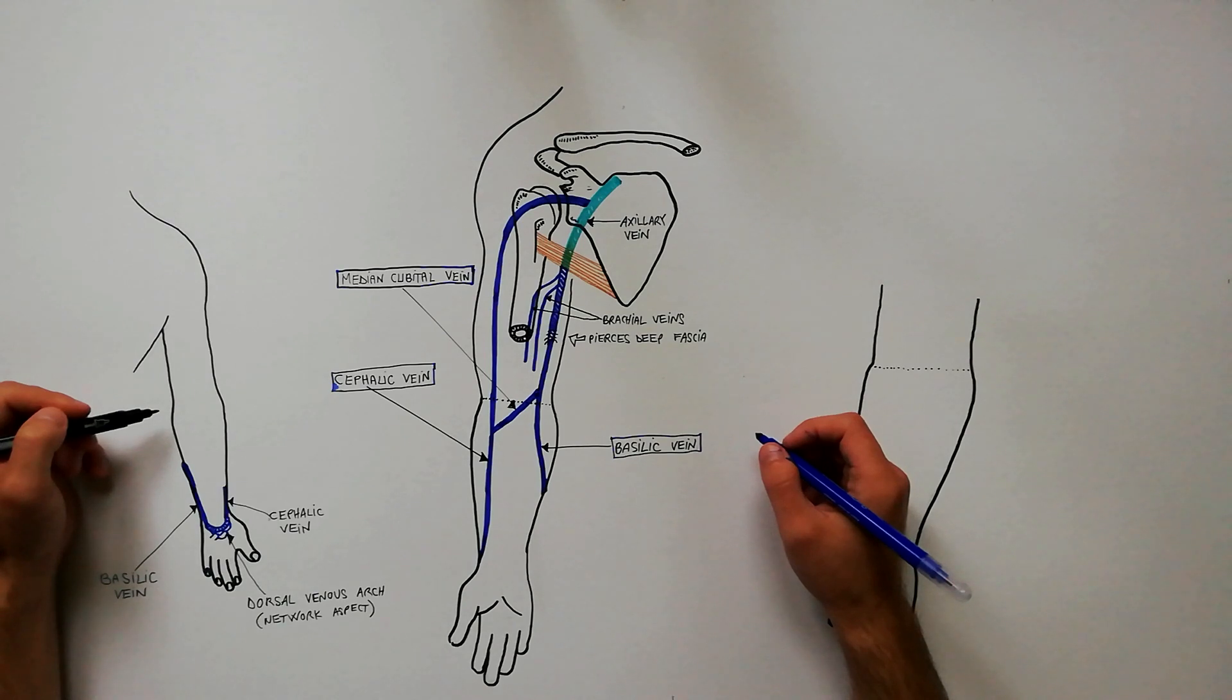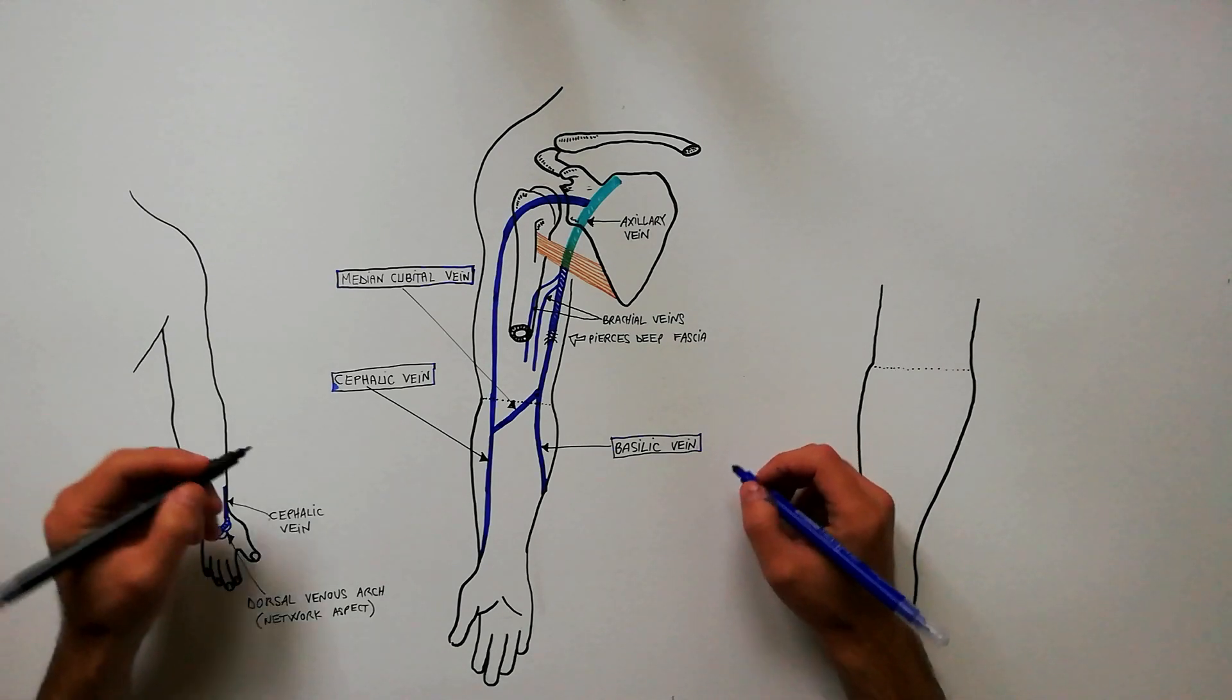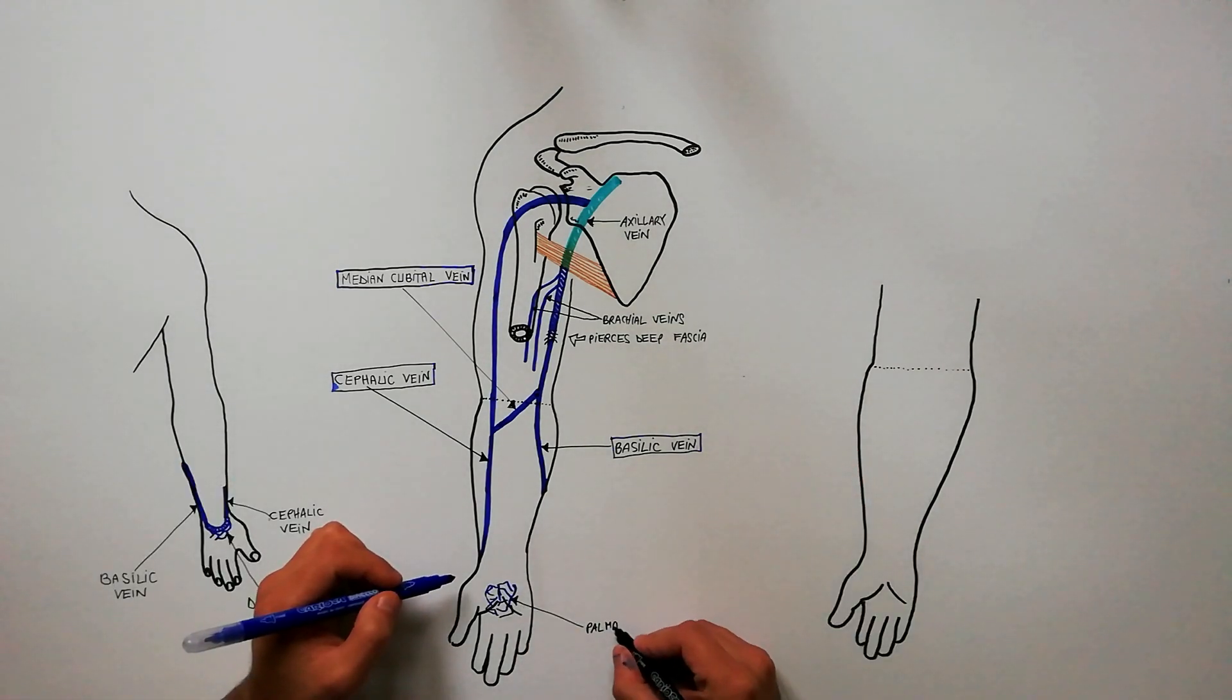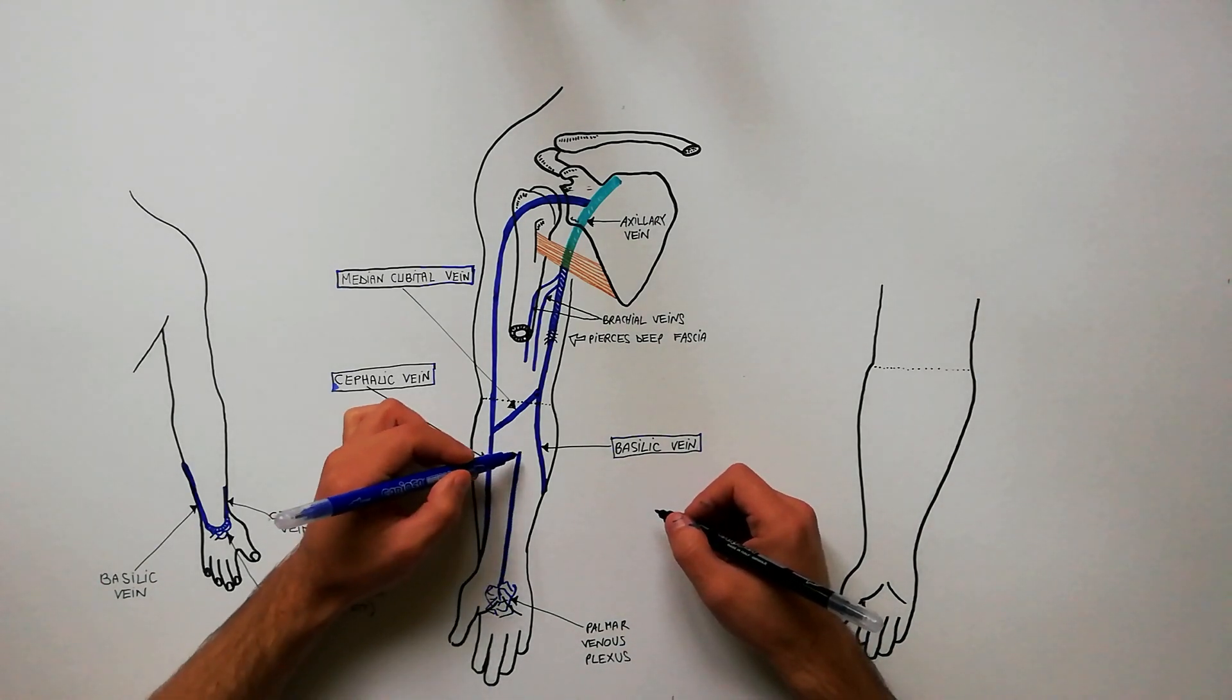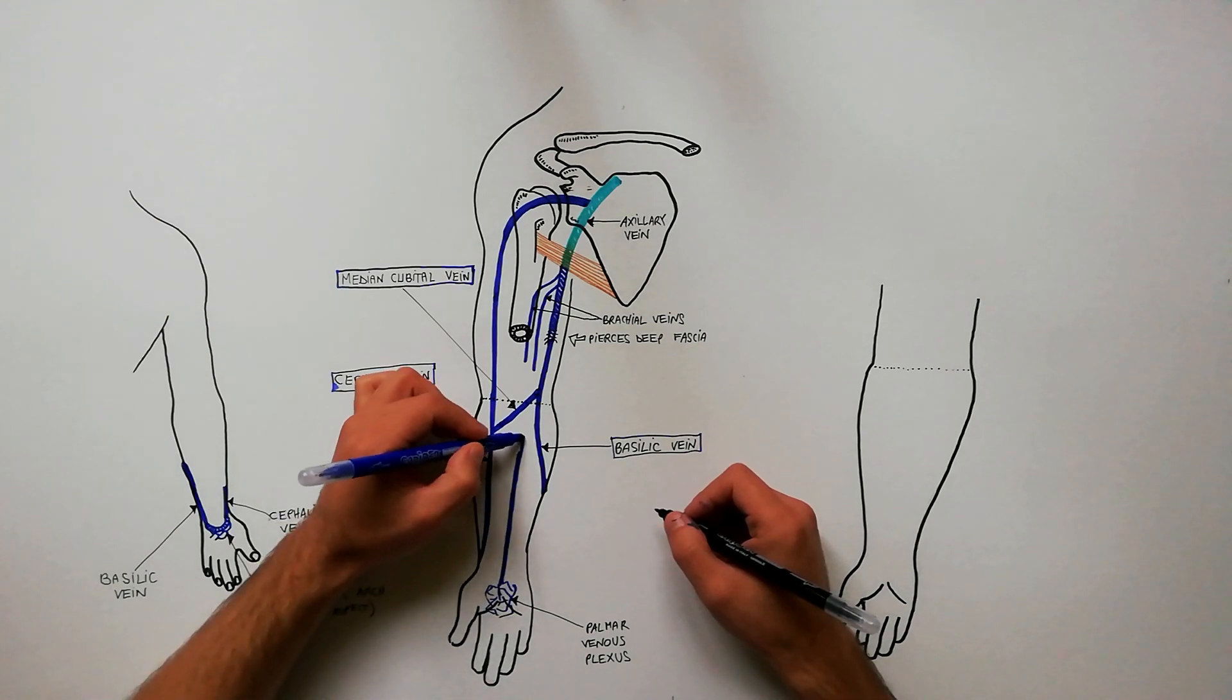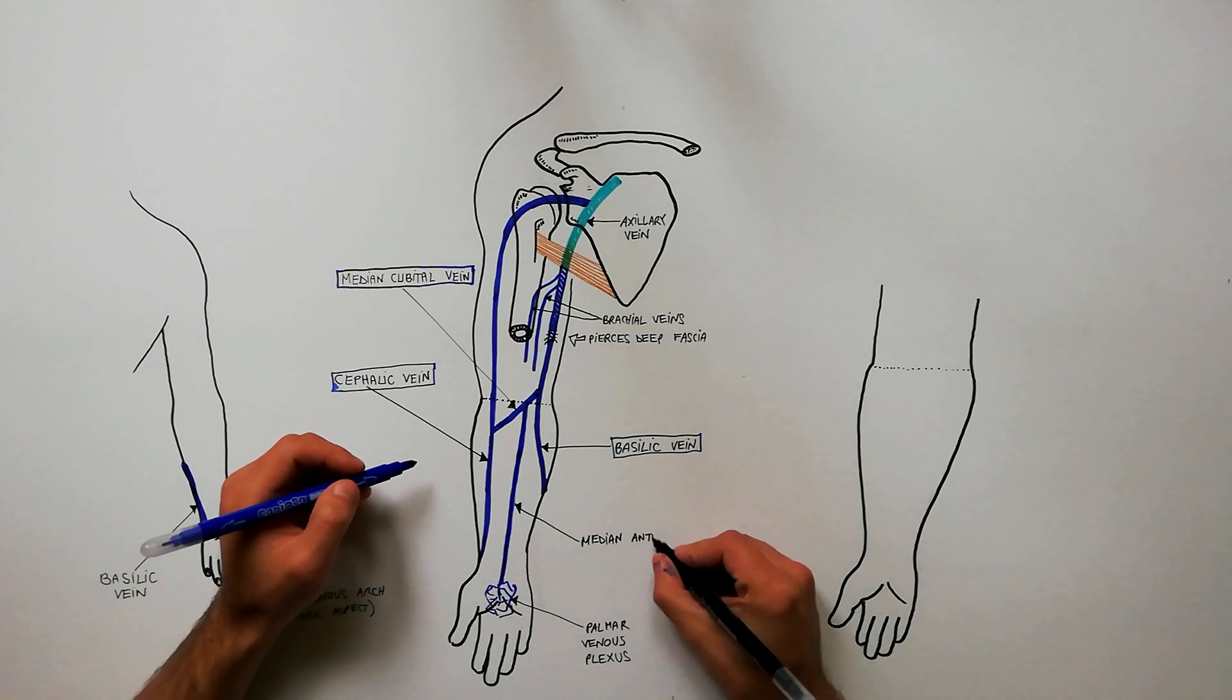We have one more vein to indicate: the median antebrachial vein. This vein drains the venous plexus on the palmar surface of the hand and runs upwards in the midline of the anterior aspect of the forearm to end usually in the median cubital vein or in the basilic vein.